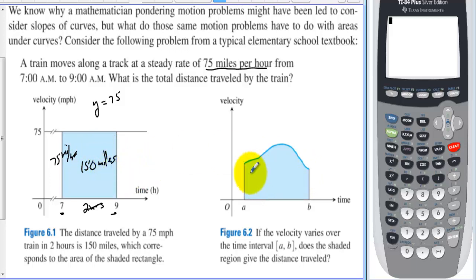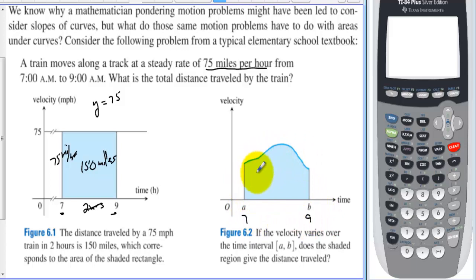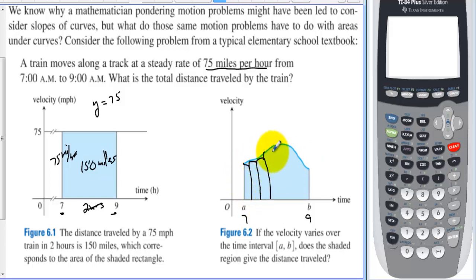What if the speed is not constant? What if the speed varies, and we go from 7 to 9 again? Well, instead of a rectangle, we can break this up into a whole bunch of little rectangles. We could take the area of those rectangles and say that's the distance traveled.